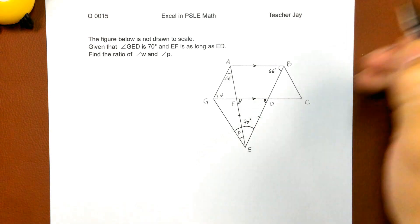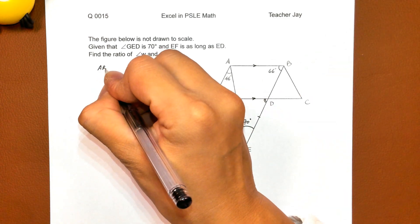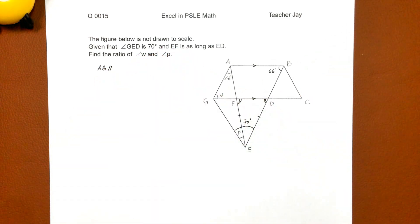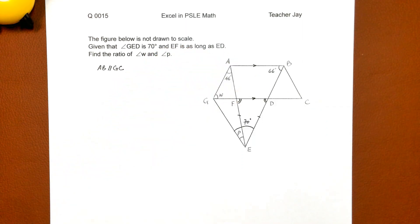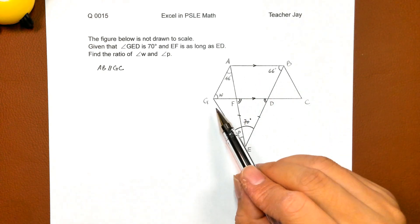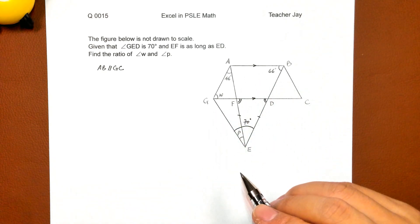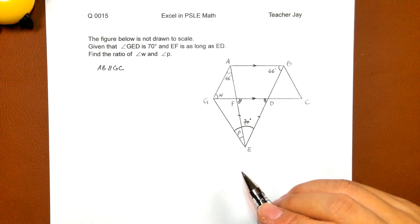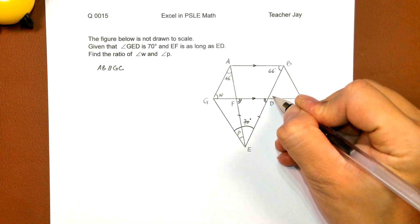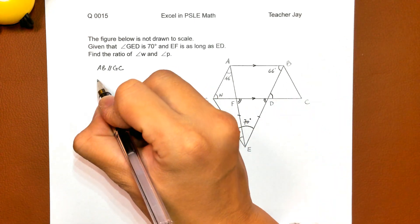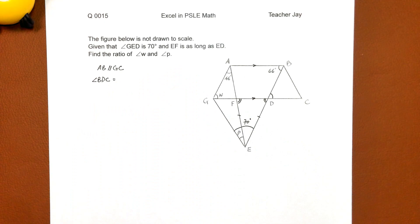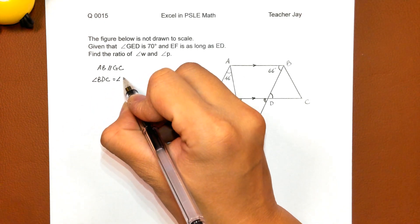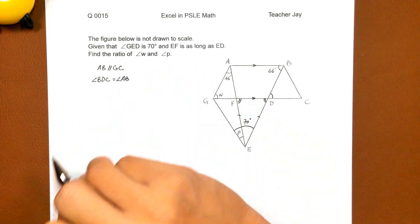Means AB is parallel to GC. And since AB is parallel to GC, we know that this angle, which is angle BDC, equals angle ABD.